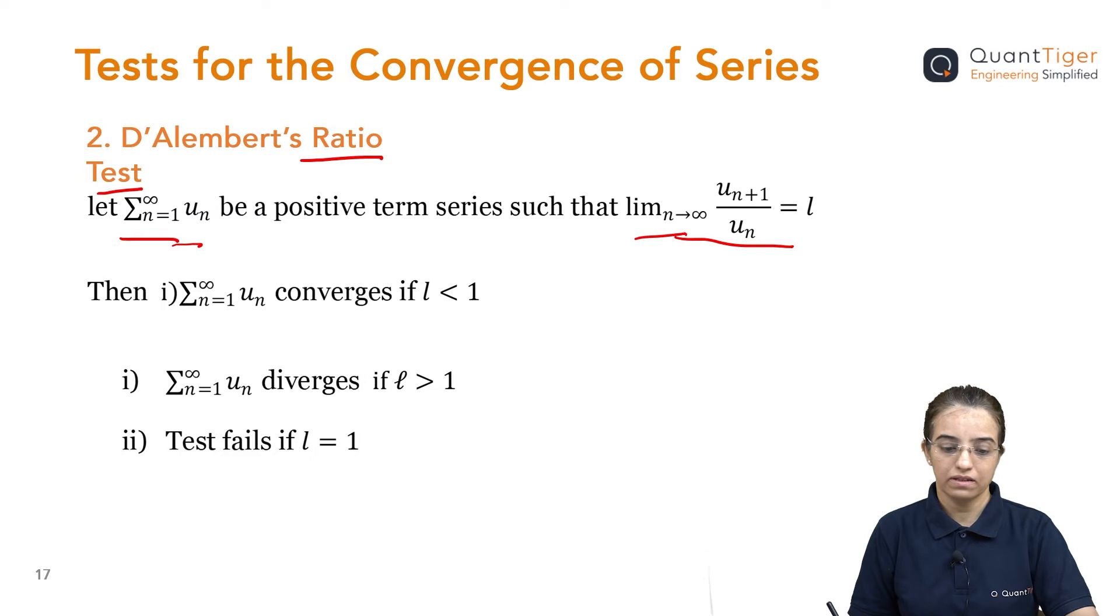If the answer after taking the ratio of u_{n+1} upon u_n is greater than 1, then we can say that it is divergent. Or if in case this answer is equal to 1, then we say that this test has failed. So, depending on what answer you get, we are going to decide it. First important thing is you should be able to take the ratio of the given series, and then later on, depending on the answer, we are going to decide it.